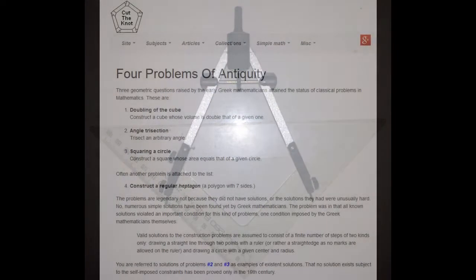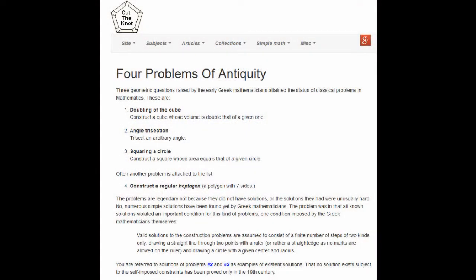Going back to ancient times, the four problems of antiquity: doubling the cube, trisecting the angle, squaring the circle, as well as constructing a regular heptagon or a seven-sided polygon, seven-sided shape, or even drawing a seven-sided star.